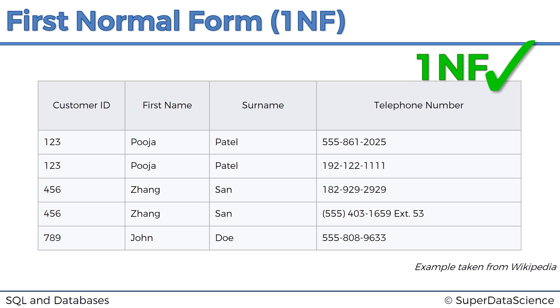Just by knowing that it's in 1NF, you're confident that there won't be duplicates, there won't be more than one value, and you can proceed with your analysis. So it gives you additional information — it's like a standard. Does this table conform to the standard or not? In this case, we've made a table that does.